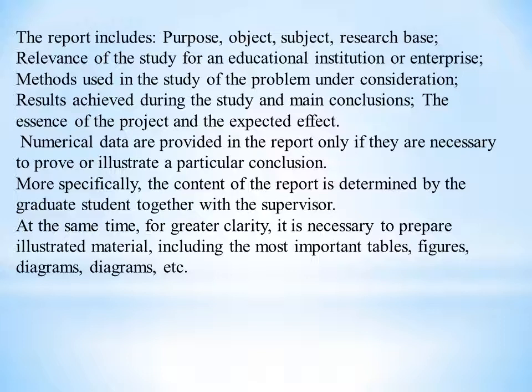The main part of the Diploma Project contains data reflecting the essence, content, methodology and main results of the work performed. The main part is, as a rule, divided into sections and subsections. The graduation project may include 2-3 chapters. During the review of literary sources in the first chapter, the conceptual apparatus and methodological foundations of the problem should be disclosed.